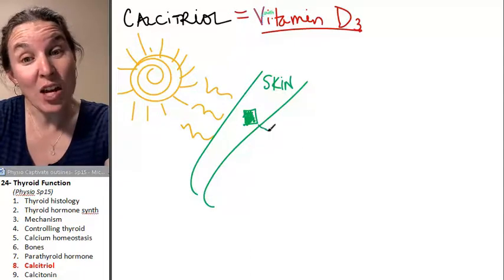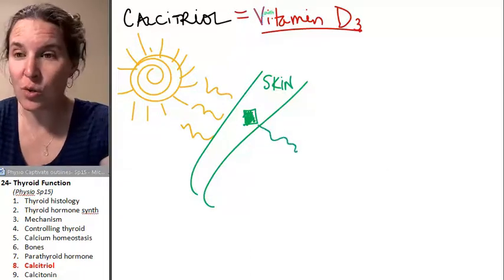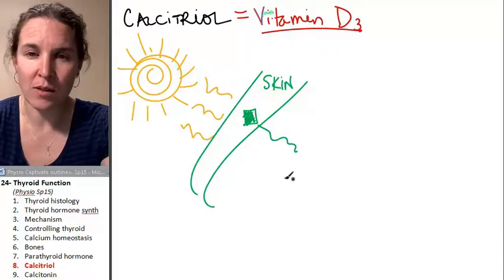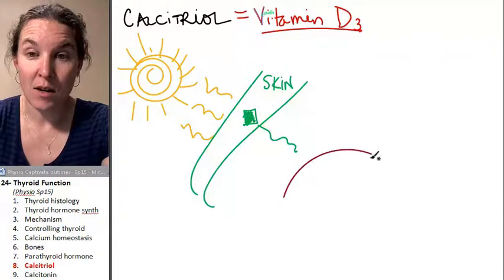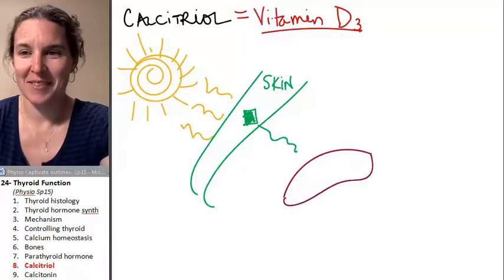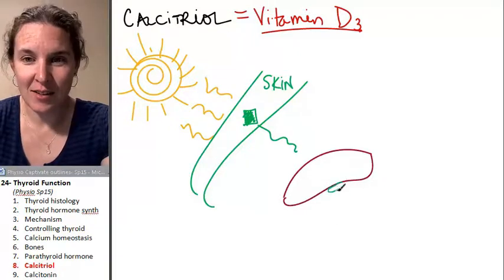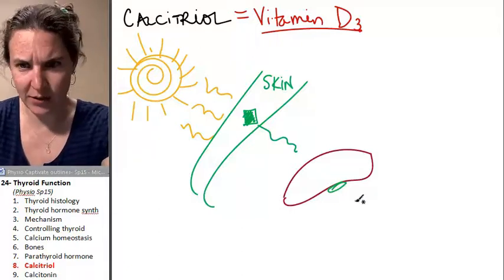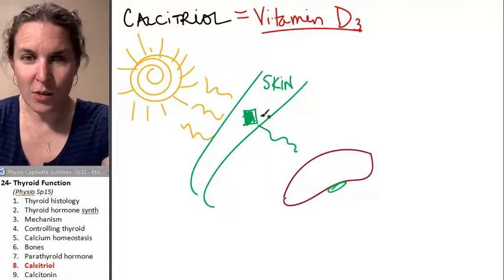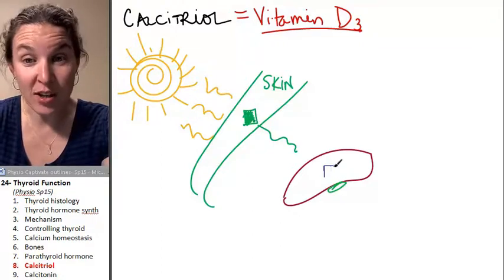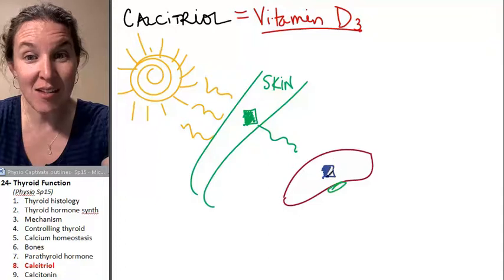which then travels to, I'm going to draw you a little, what's it called? Pictionary, what is this? Okay, I'll give you a little hint. But of course, this is the liver. So this little precursor was built in the skin and it travels to the liver and it gets turned into something else.